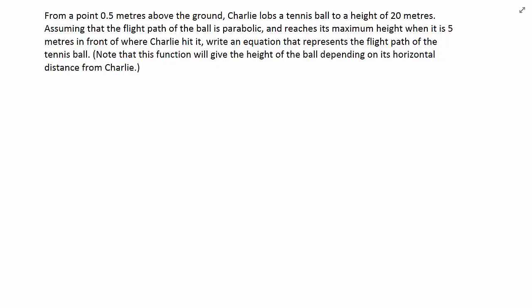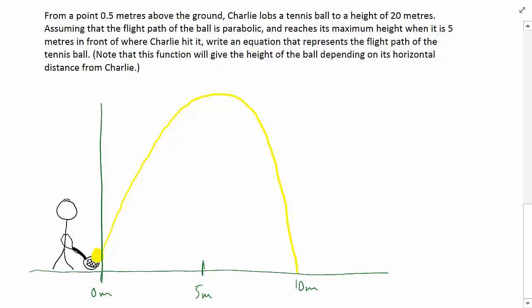Let's try another example now. From a point 0.5 meters above the ground, Charlie lobs a tennis ball up to a height of 20 meters. Assuming that the flight path of the ball is parabolic and it reaches its maximum height when it's 5 meters in front of where Charlie hit it, write an equation that represents the flight path of the tennis ball. Note that this function will give the height of the ball depending on its horizontal distance from Charlie. Let's sketch this out. We can put the point of impact right here at the vertical y-axis, say that's 0 meters. Obviously this parabola is opening downwards. When it's 5 meters ahead, we've got it up here at a height of 20 meters. And then another 5 meters ahead from that, it would be at 0.5 meters above the ground, and it will hit the ground just shortly after that.